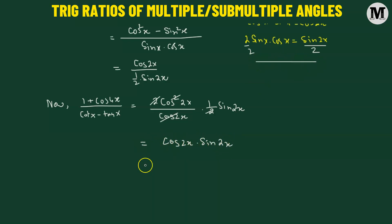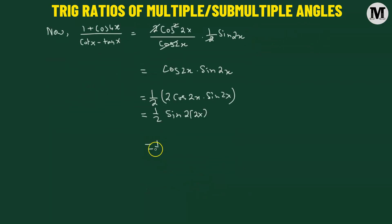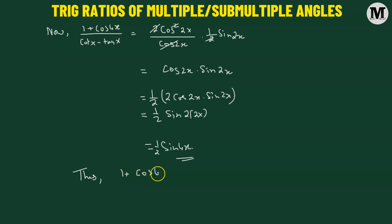We can apply the double angle formula once more. We want 2 times cosine 2x times sine 2x, but since 2 is an extra factor we introduced, we compensate by multiplying by one-half. Therefore, 2 times cosine 2x times sine 2x becomes sine of 2 times 2x, leaving us with one-half sine of 4x. So the simplified value of 1 plus cosine of 4x divided by cotangent of x minus tangent of x equals one-half sine of 4x.